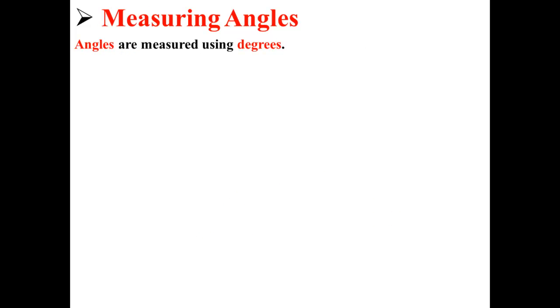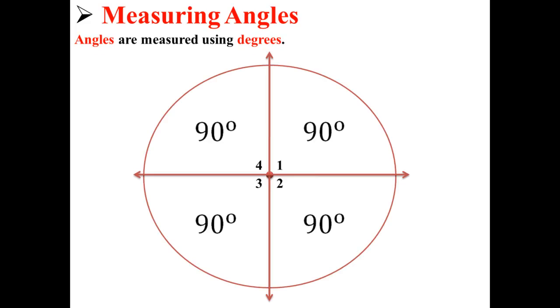Now angles are measured using degrees. Here we have a circle. A circle is made up of 360 degrees, so angle 1 would be 90 degrees, angle 2 would be 90 degrees, angle 3 would be 90 degrees, and angle 4 would be 90 degrees.